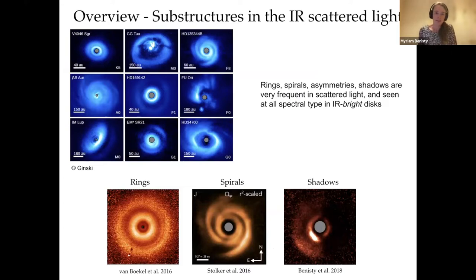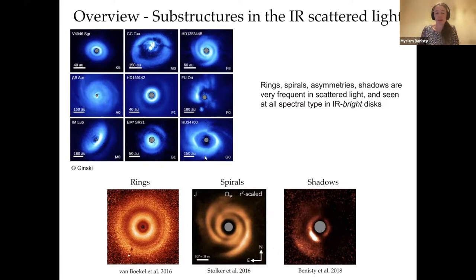In infrared scattered light, we see a lot of substructures in bright disks — as soon as we observe a disk that is bright enough in scattered light, we see these substructures, very regularly around objects of all spectral types. The three main categories are rings and gaps, spiral arms again associated with dust-depleted cavities, and another kind of feature we call shadows.